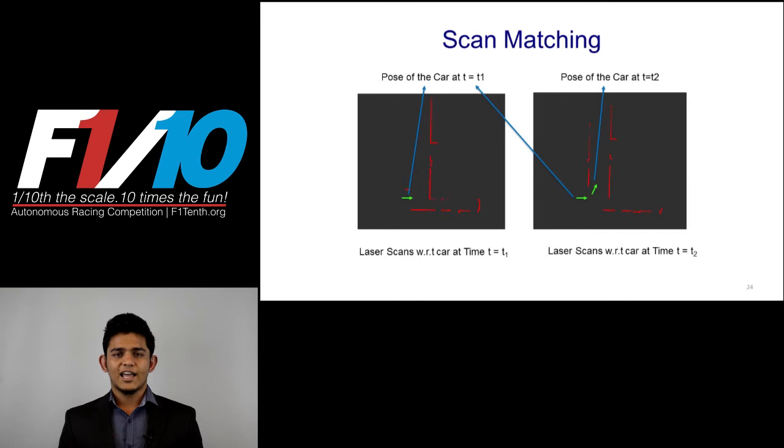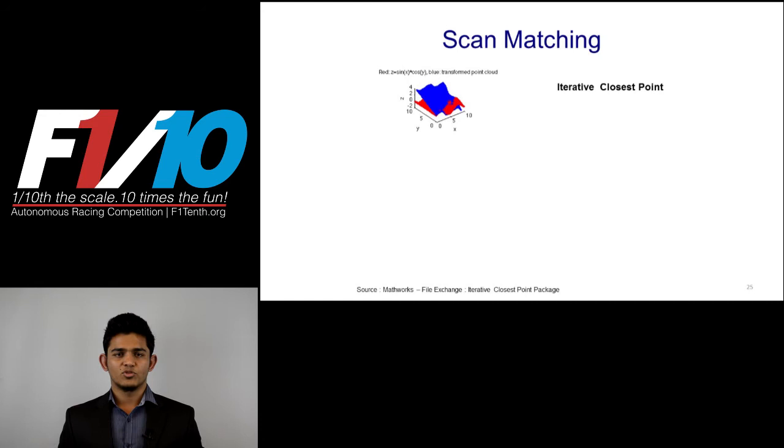The laser scans we get are point clouds which give us information about the 2D map of the current environment around the robot within its distance range. The most common approach to find the transformation between the point clouds is iterative closest point, also known as ICP.